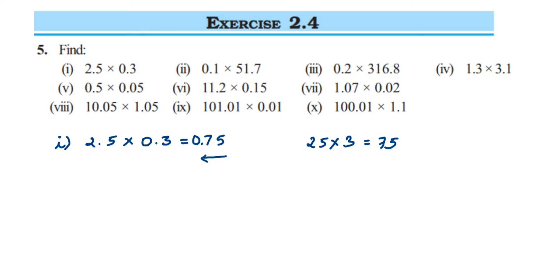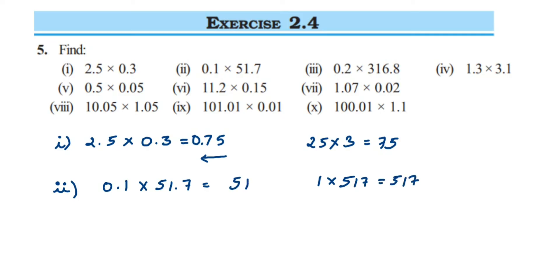The second question is 0.1 multiplied by 51.7. Ignoring decimals, this is like 1 multiplied by 517, which equals 517. Now placing the decimal: after the decimal we have one digit in the first number and one digit in the second number, so total two digits. Counting two digits from the right — 7, 1 — we place the decimal there, giving 5.17.